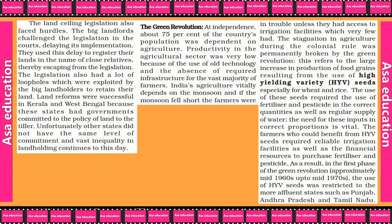The stagnation in agriculture during the colonial rule was permanently broken by the Green Revolution. This refers to the large increase in the production of food grains resulting from the use of high-yielding variety (HYV) of crops. The use of these seeds requires fertilizer and pesticides in correct quantities as well as a regular supply of water, and the need for these inputs in the correct proportion is vital.